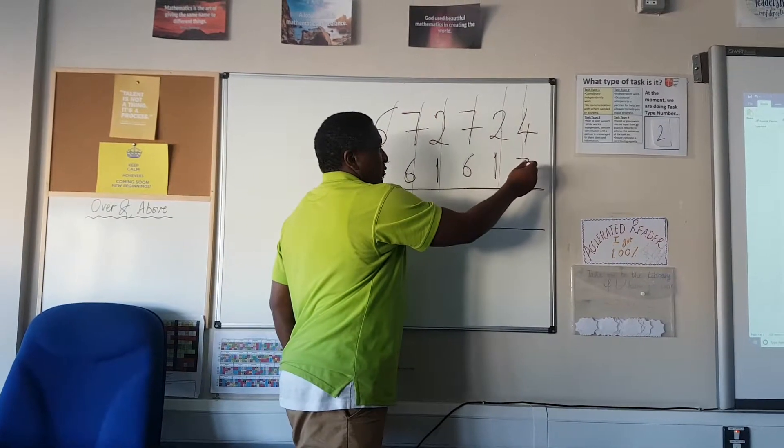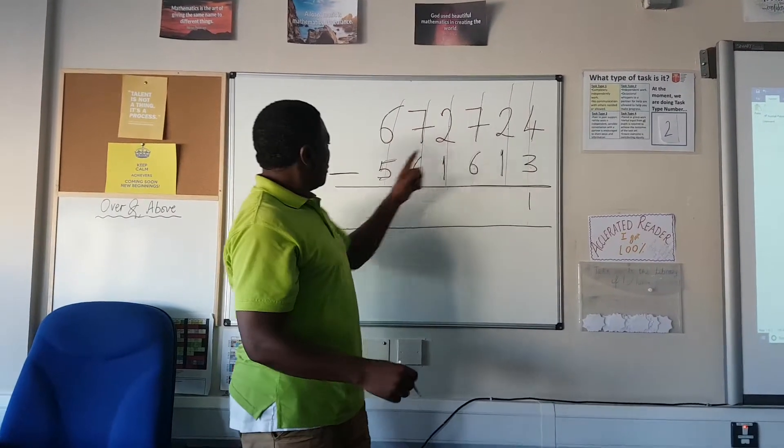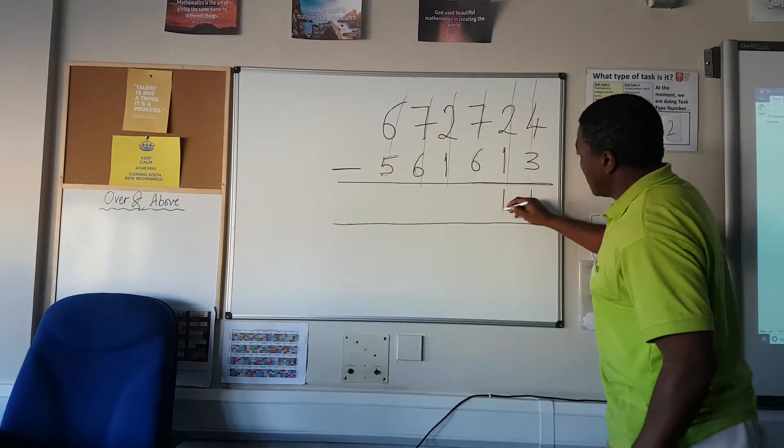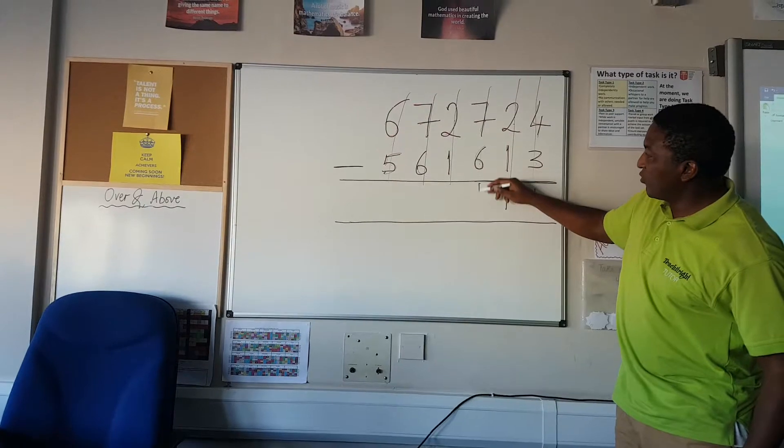4 take away 3 is 1, or 4 minus 3. 2 take away 1 is 1, and you write it directly on a straight line. 7 take away 6 is 1.